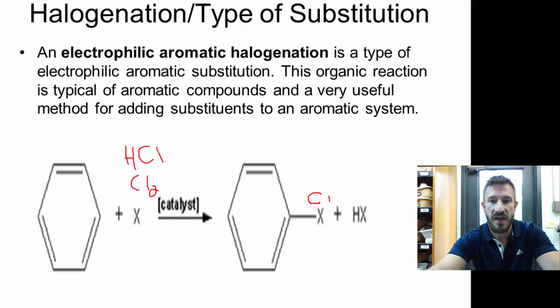And then on the other side, you would have, instead of HX, you would have HCl. You just have a chlorine on the other side where that X is. That's an example of a halogenation reaction or a substitution. Remember, benzene is C6H6.